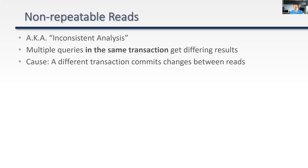Non-repeatable reads, also known as inconsistent analysis, occur when multiple queries within the same transaction produce different results. This means another transaction may have committed a change between those reads, and your isolation level is allowing those reads to see the change. Whether that's acceptable is a business decision.